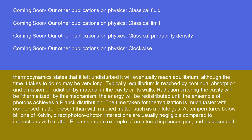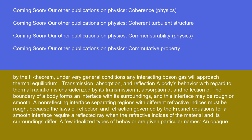Photons are an example of an interacting boson gas, and as described by the H-theorem, under very general conditions, any interacting boson gas will approach thermal equilibrium. A body's behavior with regard to thermal radiation is characterized by its transmission tau, absorption alpha, and reflection rho. The boundary of a body forms an interface with its surroundings, and this interface may be rough or smooth. A non-reflecting interface separating regions with different refractive indices must be rough, because the laws of reflection and refraction governed by the Fresnel equations for a smooth interface require a reflected ray when the refractive indices of the material and its surroundings differ.